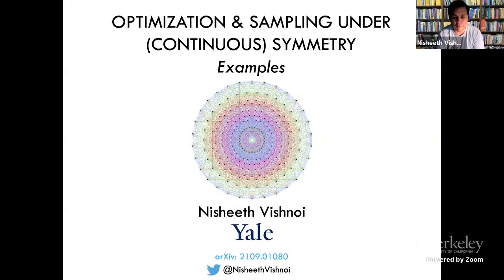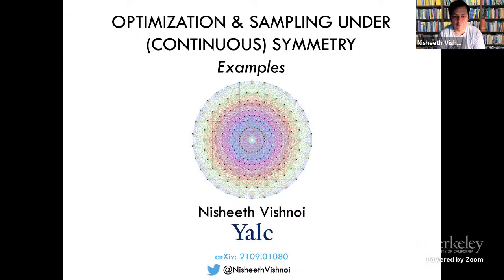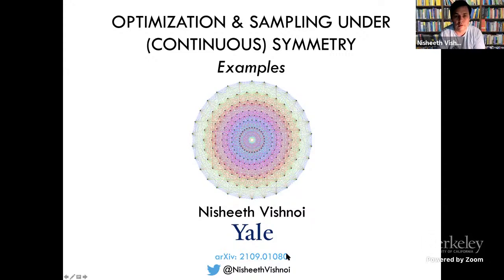Thanks for the introduction. It's towards the end of the boot camp, and we already heard two really great talks today about the role symmetries play in computational problems. In this talk, which is a two-part talk — the second one will be given by Jonathan Leake — we are going to be looking at optimization and sampling problems under continuous symmetries. Jonathan and I just wrote up a survey on our talks, available on the archive now in case you want to look at more details, and the talks are based primarily on this survey.